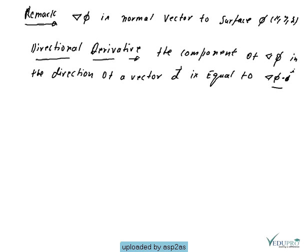The directional derivative should be written as a formula. Directional derivative is always equal to the component of del phi in the direction of vector d. Since the component in a direction is found using the dot product with the unit vector of that direction, we can write: directional derivative equals del phi dot d-cap. So this is the directional derivative in the direction of vector d.